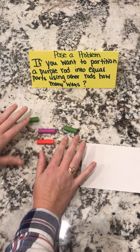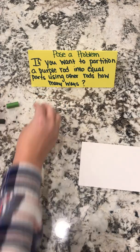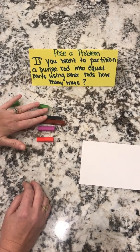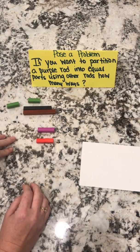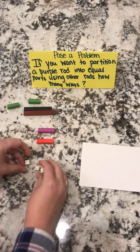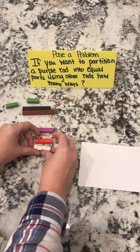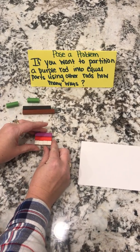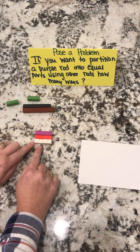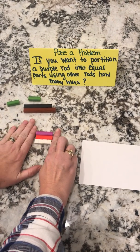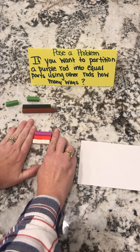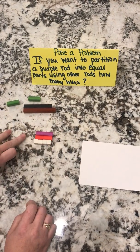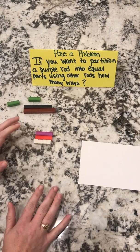Students are going to start to see that they need to have those equal groups, and they're going to start to see that colors larger than the purple rod will not be able to be used to partition it. I'm going to try my white rods, and I know that my purple rod can be partitioned into four white rods because they take up that same amount of space, making them equal.